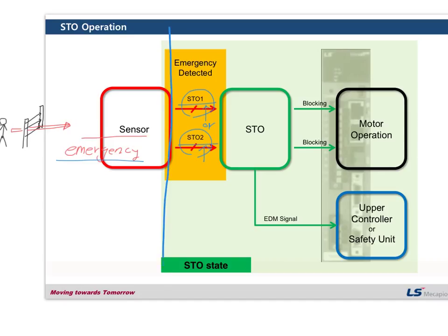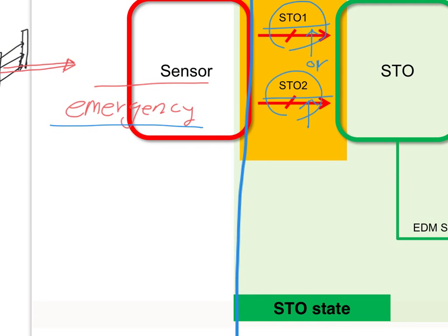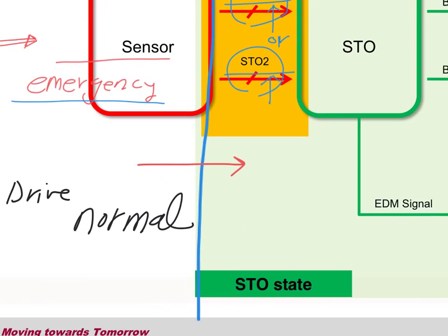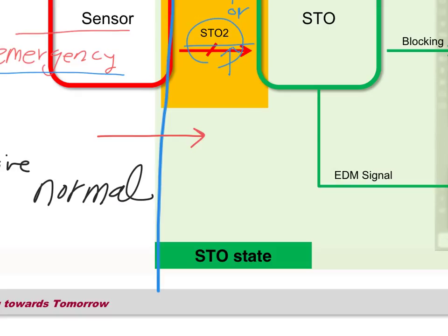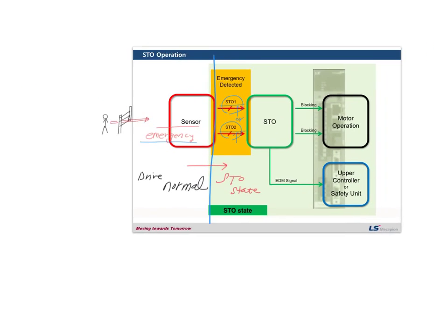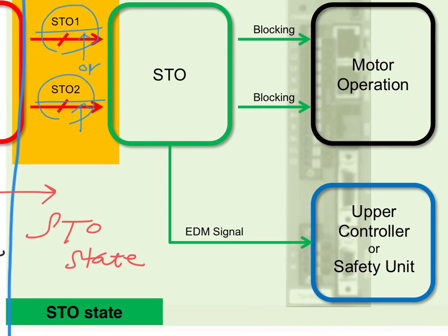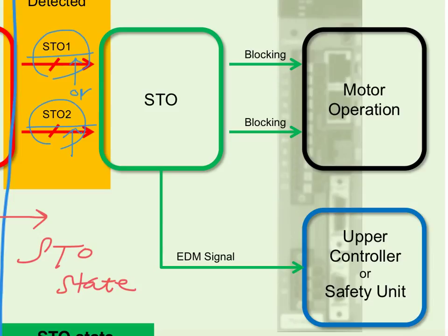Before sensor detects emergency, the drive state is just normal. However, it detects emergency. The drive state changes, it switches to STO state. And in STO state, the STO blocks motor operation. So the motor operation is blocked.